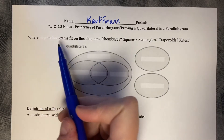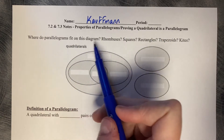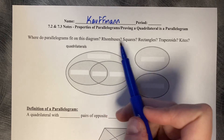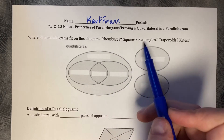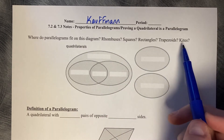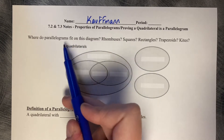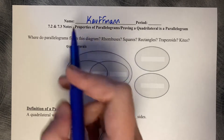Where do parallelograms fit on this diagram? We have rhombuses, squares, rectangles, trapezoids, and kites. This is just another representation of the hierarchy of quadrilaterals.